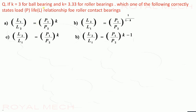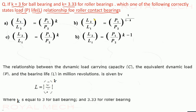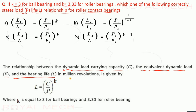If k = 3 for ball bearing and k = 3.3 for roller bearing, the relationship between dynamic load carrying capacity C, equivalent dynamic load P, and bearing life L in linear revolutions is given by L = (C/P)^k. For roller contact bearing k = 3.3, so option C is the correct option.